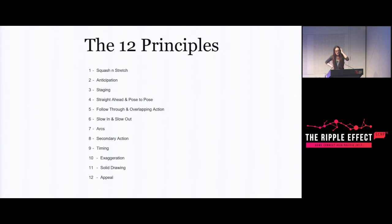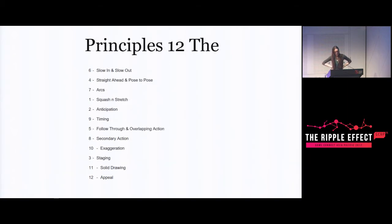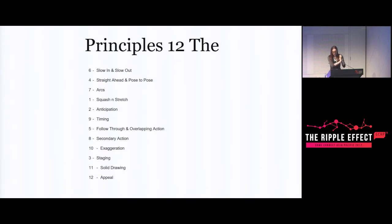The 12 principles are these - I'm not going to read them all out because we'll be going through them. This is the order they appear in the book, which is roughly in order of importance from the authors' perspective. Coming at this from a different context, I have a slightly different opinion about what a good order would be, so I'm going through them in a different order. The numbers might be out of order, but it's the same things - just a different thread. Let's get started.